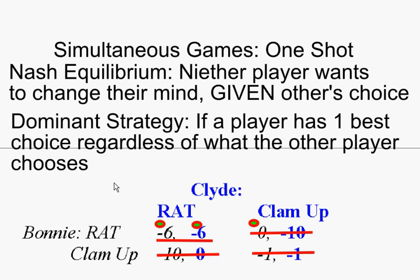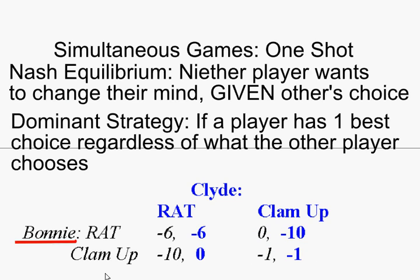A dominant strategy just means — let's look at Bonnie for example. Bonnie will have a dominant strategy if we find that she has one best choice that she would like to make no matter what Clyde chooses. That's what a dominant strategy means. So if Bonnie has a dominant strategy to always rat, it means that if Clyde rats she wants to rat, or if Clyde clams up she wants to rat. So no matter what Clyde does, she has one clear best decision always to make.